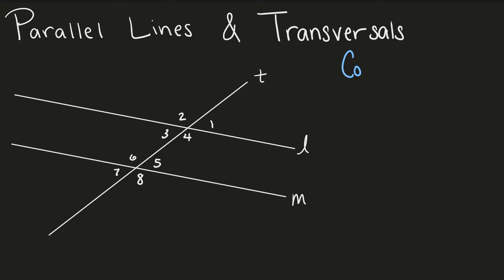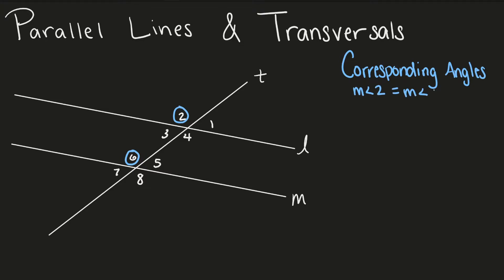Let's start with corresponding angles. Angles that are on the same side of the transversal and on the same side of the parallel lines are corresponding angles. Angle 2 and angle 6 are both on top of the parallel line and to the left of the transversal, so they are corresponding and they're congruent. Another example of corresponding angles would be angle 4 and angle 8.